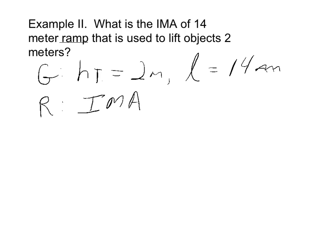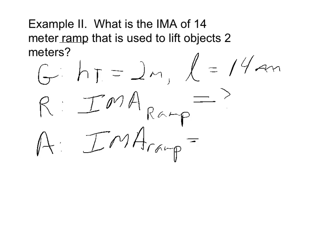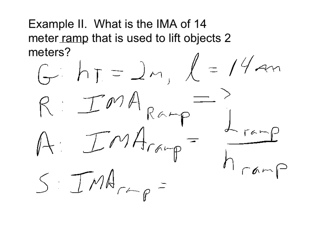We're solving for the IMA of a ramp. The formula is: IMA equals the length of the ramp divided by the height of the ramp. The only tricky part is making sure all units are the same — meters divided by meters, or centimeters divided by centimeters. So: IMA equals 14 meters divided by 2 meters. It's a ratio, so the units cancel. 14 divided by 2 is 7, so this ramp has an ideal mechanical advantage of 7.